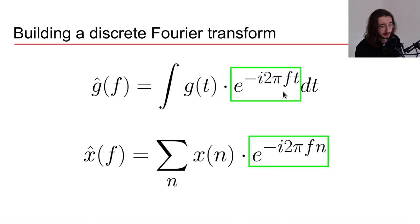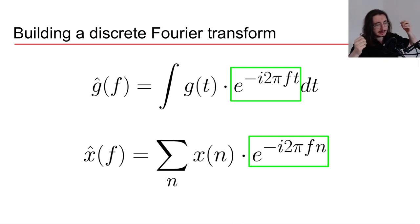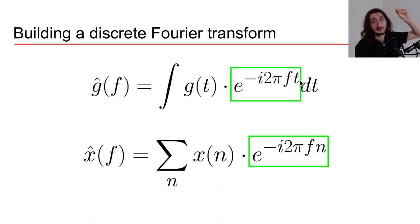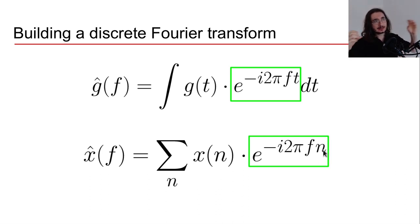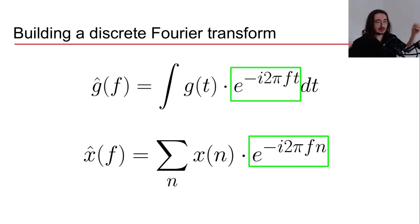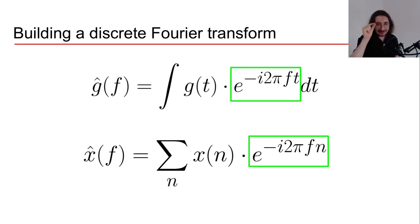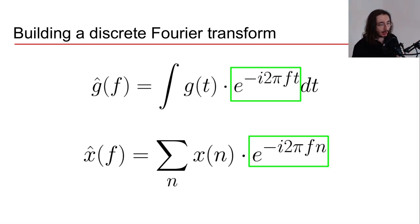The exponential term more or less stays the same — this is the pure tone we decompose our original signal into. The one modification is that instead of t we now have n. At a high level, instead of dealing with time t as a continuous variable, we are taking snapshots at discrete points n. So all in all, we replace t with n, giving us a first version of the discrete Fourier transform.